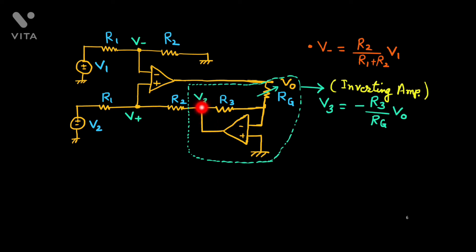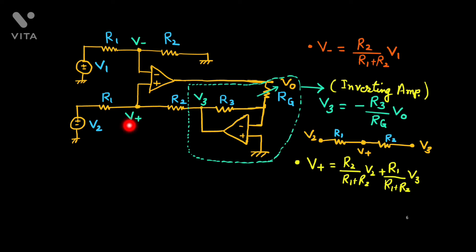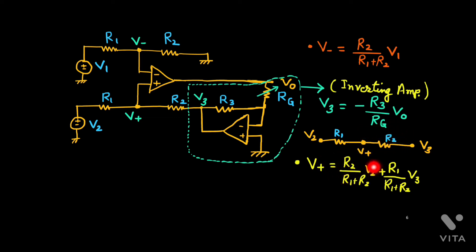This potential is V2 and there is no current here. With resistance R1 and R2, we can find V_plus. We consider V2 at this end with R1 and R2, and the potential at this node is V_plus, with V3 at the other end. Using the superposition principle: when V2 is acting, V_plus contribution is R2 over R1 plus R2 times V2; for V3, the contribution is R1 over R1 plus R2 times V3. Alternatively, applying KCL at the node: (V_plus minus V2) over R1 plus (V_plus minus V3) over R2 equals zero, and solve for V_plus.